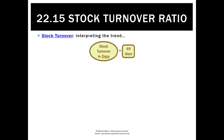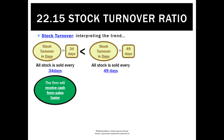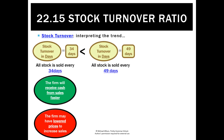Interpreting the trend: if it goes from 49 days down to 34 days, that's actually a good trend in terms of getting the cash from sales faster. It could also be a negative in the sense that maybe we had to lower prices to do it — we're not looking at how much profit we're making here, just how quickly we can sell the stock.